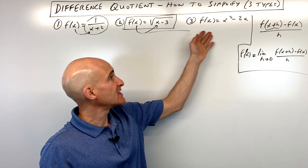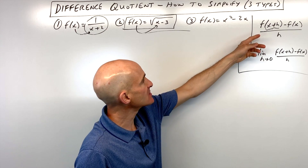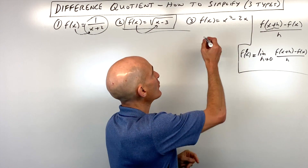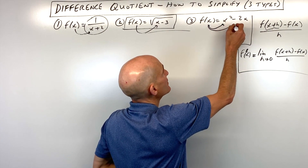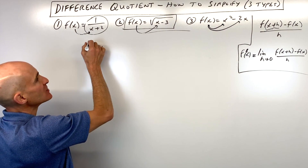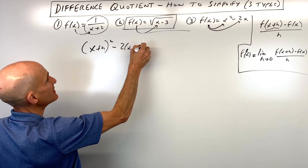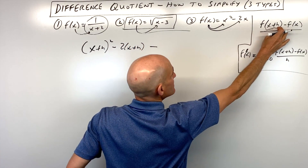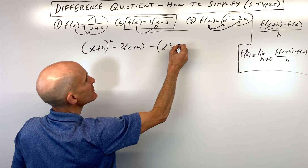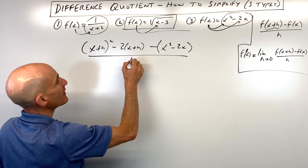In our third example, f of x equals x squared minus two x. Same process — whatever's in the parentheses goes in for x on the right. There are two x's, so we substitute into both. We get x plus h squared minus two times x plus h, minus f of x in parentheses, all divided by h.